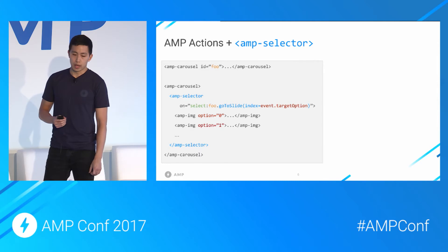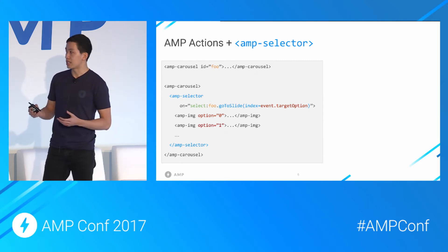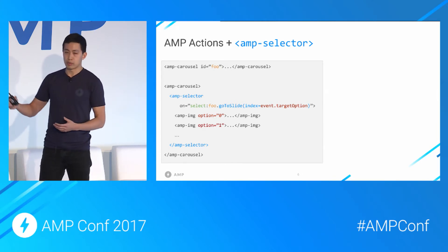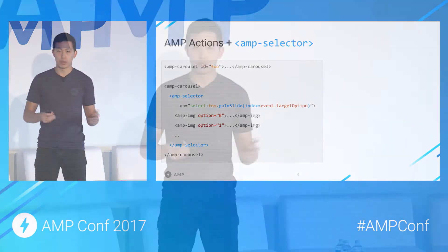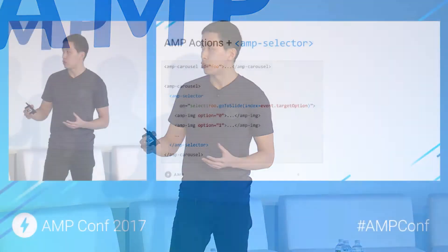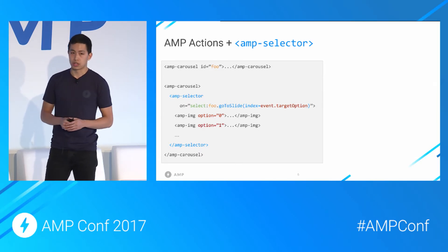Recently, we released a new AMP component called amp-selector. amp-selector's goal is to make the selecting use case more concise and natural to use. Instead of duplicating the action markup on each image, amp-selector wraps all the images and has a single action and its own select event. Each child image is identified with an option attribute. On select, amp-selector calls go-to-slide with the option value of the selected image. amp-selector is not constrained to only AMP images — any child HTML element with an option attribute works, so it's a general abstract component. It's all documented on amp-project.org.